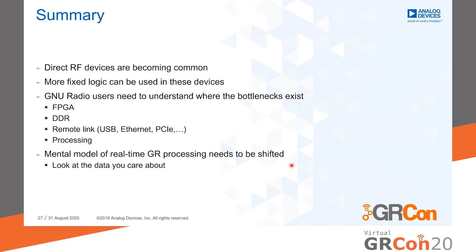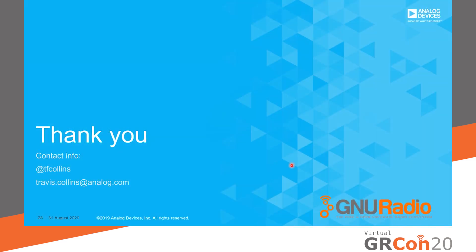Just to close things up: Direct RF devices are coming and becoming more common. They come with fixed logic inside that you can take advantage of to knock things down and get the data you care about. As a user, you need to understand where bottlenecks exist in your system — FPGA clocking limitations, memory limits on DDR write speed, link capacity. The mental model of real-time in GNU Radio needs to shift a bit. That doesn't mean you can't use it; you just need certain expectations. Look at the data you care about in GNU Radio and use the features of the hardware that exist. If you want to reach out, my username on GitHub is tfcollins. Thank you.